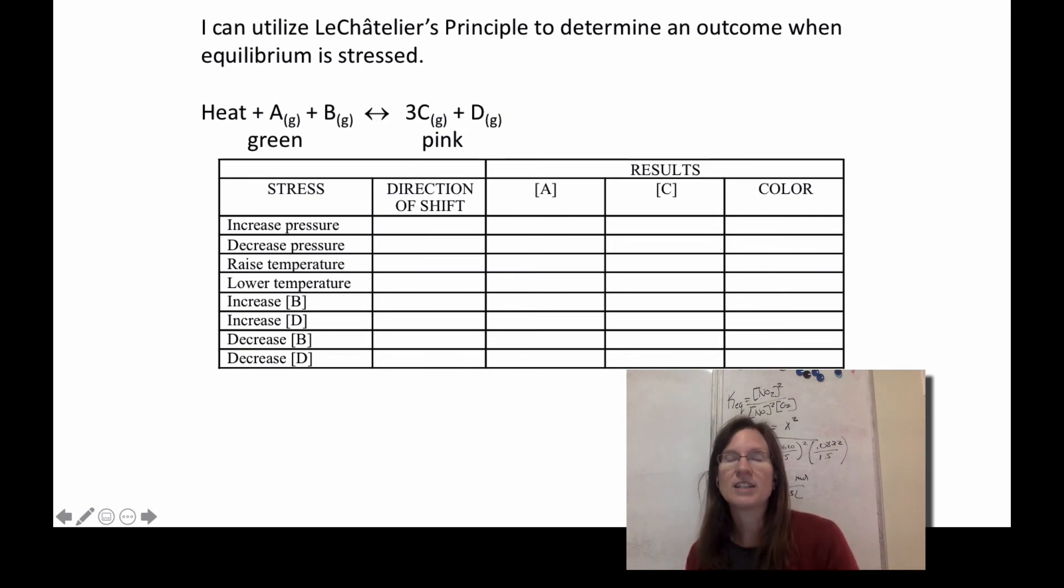So one phrase I've heard before is up away. So if you increase something, you're always going to shift away from it to make it go down. If I decreased B, on the other hand, that would be my stress. Le Chatelier says I'm going to shift to try to undo that, so I'm going to shift towards putting it back. If I decrease something, I always shift towards it, which means in this case A would go up because it's on the same side as B, and D would go down, thus making it more green because A is going up.